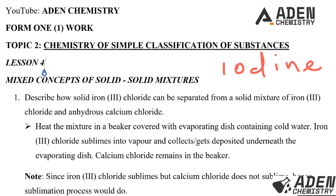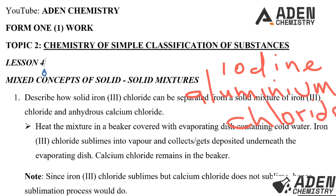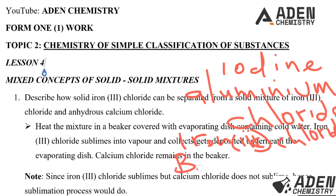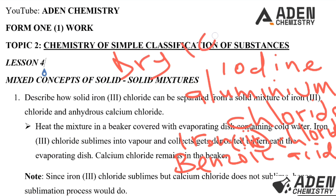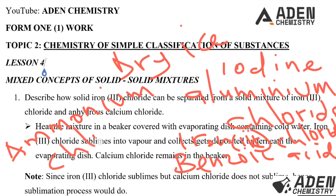Substances that undergo sublimation include iodine, aluminium chloride, iron(III) chloride, benzoic acid, dry ice (solid carbon dioxide), and ammonium chloride. If you come across one of these substances in a mixture, the method used to separate that mixture will be sublimation method.